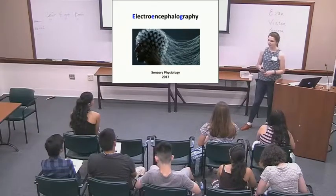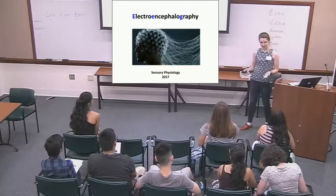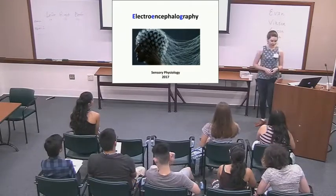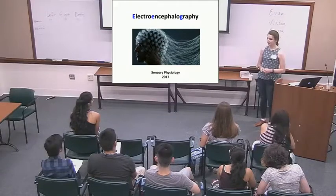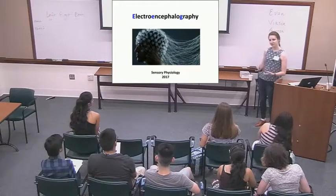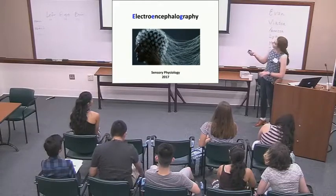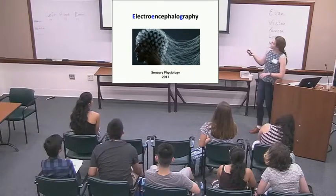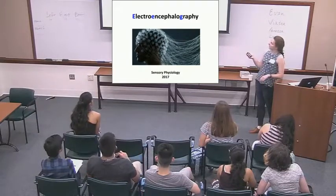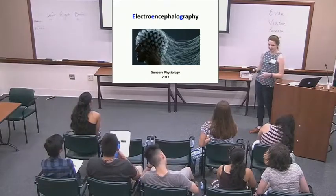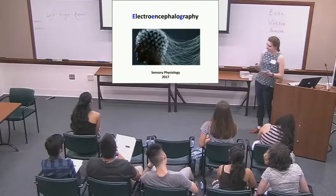Obviously all your senses are being processed by the brain, and that's how you actually get to perceive all these senses in your environment. We're going to spend a little bit of time talking about the brain and in particular one method of measuring activity in the brain. This method is called electroencephalography — EEG for short.